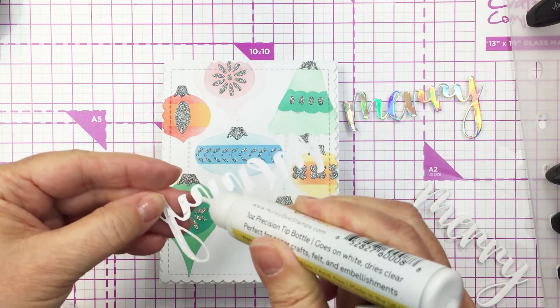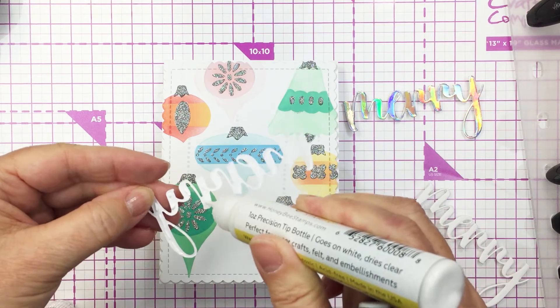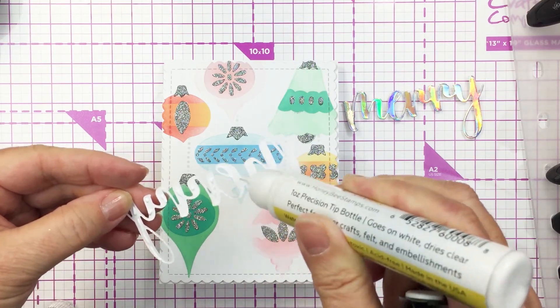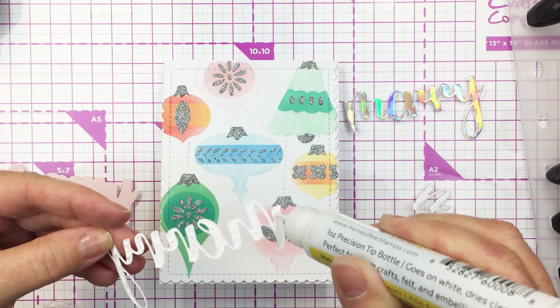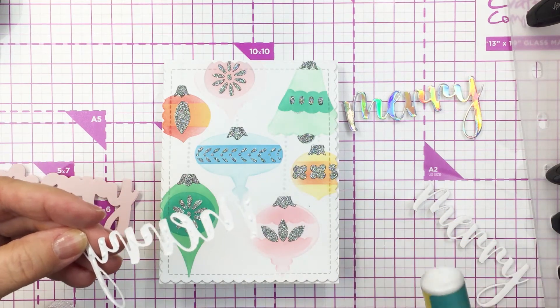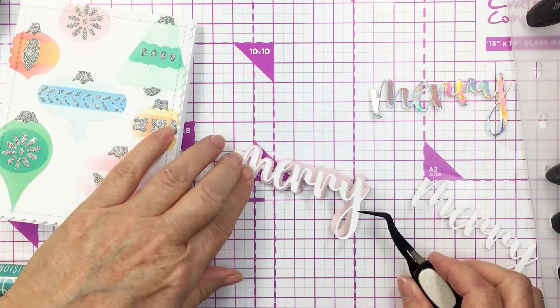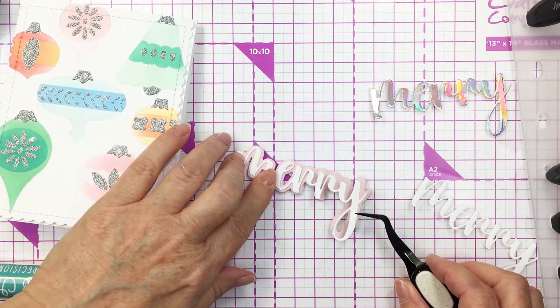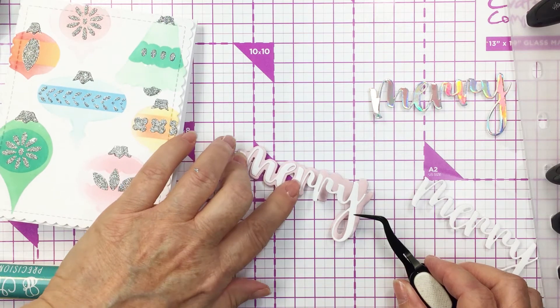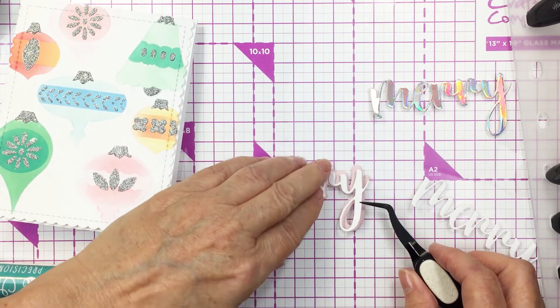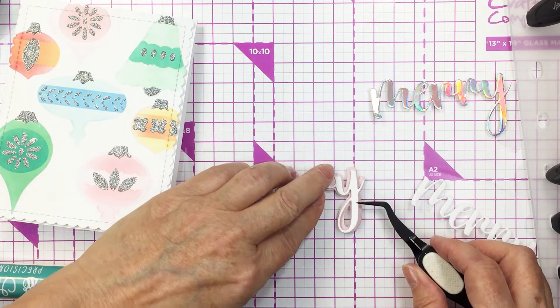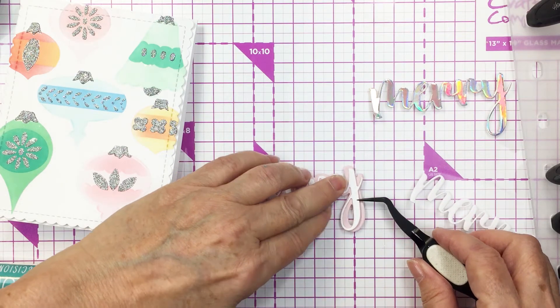I'm going to use my Honey Bee glue tube and I'm going to glue all of those different layers of that merry buzzword together. I'm going to glue this first layer onto the pink outline, and then I will layer the second white layer on top of that first white layer, and then I'll finish off with that holographic cardstock on the top.